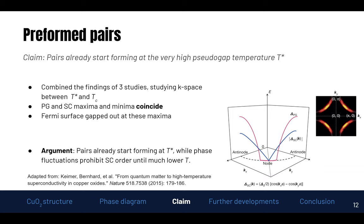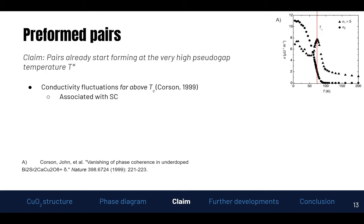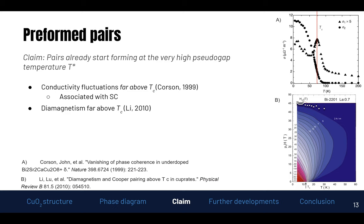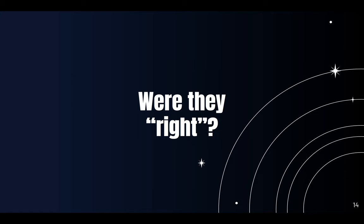They provide more arguments. They also looked at a study by Corson and colleagues in 1999, examining conductivity as a function of temperature. We see the critical temperature indicated with the red line, a spike in conductivity there, but it already starts to shoot up at far higher temperatures — associated with superconductivity and argued to be caused by preformed pairs. Perhaps the best circumstantial evidence comes from a study by Lee and colleagues in 2010 on diamagnetism, where they observed diamagnetism far above the critical temperature. With a critical temperature around 13 Kelvin, they clearly see diamagnetism even at 50 Kelvin, arguing this is caused by preformed pairs.